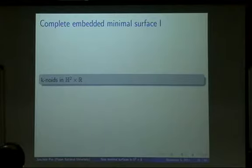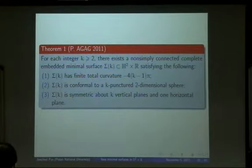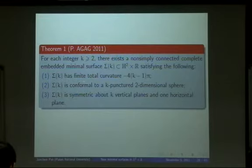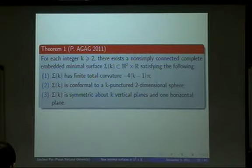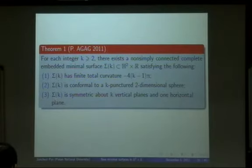I answer this question. The new example I call a k-noid in H² × ℝ. Let k be an integer ≥ 2. There exists a non-simply connected, complete, embedded minimal surface such that: the total curvature is finite with a specific value; the surface is conformally equivalent to a k-punctured two-dimensional sphere; and the surface is symmetric about k vertical planes and one horizontal plane. I will show a picture to make the meaning clear.